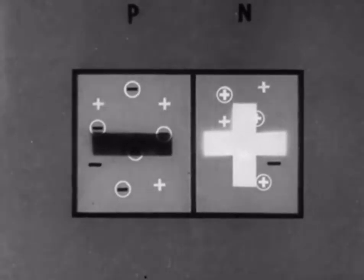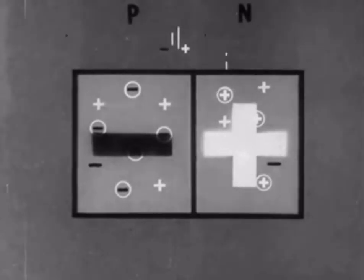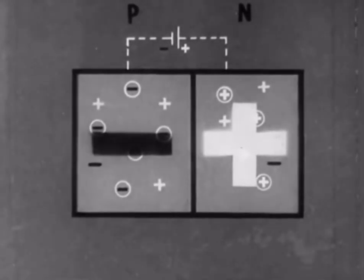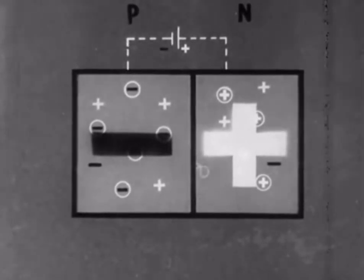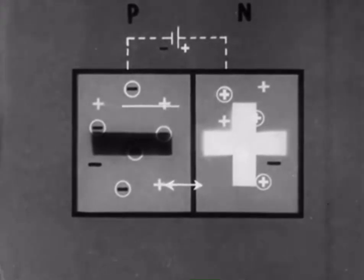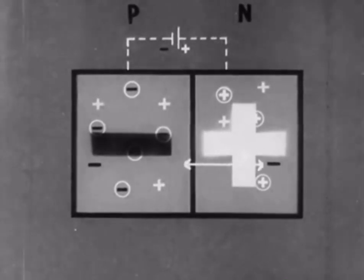We can represent this state of affairs by an imaginary battery connected, like this, with a negative pole to the P-type germanium. Because of the electric field existing between the two pieces of germanium, more positive carriers are prevented from entering the positively charged N-type germanium. Like charges repel, remember. And similarly, more negative charges are prevented from entering the negatively charged P-type germanium.